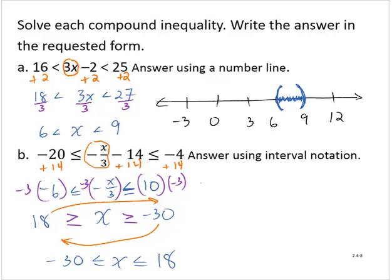We're asked to answer using interval notation. So the solutions go from negative 30 to 18. Since it can include the negative 30, I use a bracket at negative 30. Since it can include the 18, I use a bracket at 18.